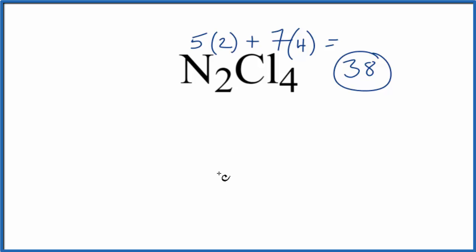Let's put the nitrogens in the center, they're the least electronegative, so we'll put those right here. And then we're going to put the chlorines around them, so we have 4 chlorines. We'll put 2 on each of the nitrogen atoms.